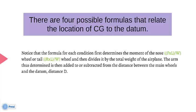The formula for each condition first determines the moments of the nose wheel — F times L, all over W — or tail wheel — R times L, all over W — and then divides by the total weight of the airplane. The arm thus determined is then added to or subtracted from the distance between the main wheels and the datum.